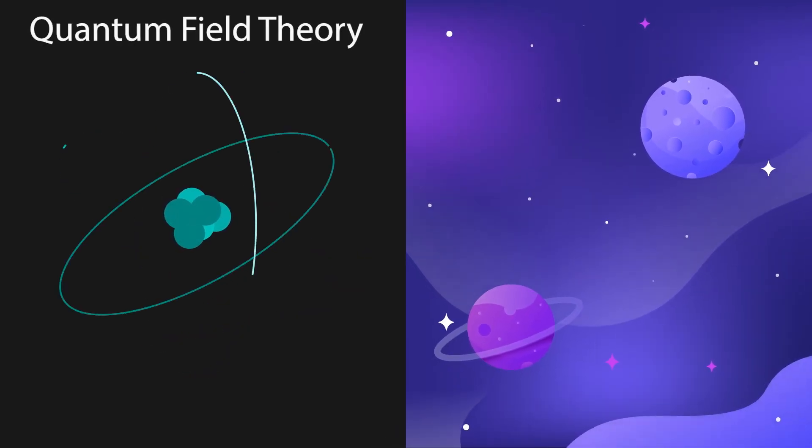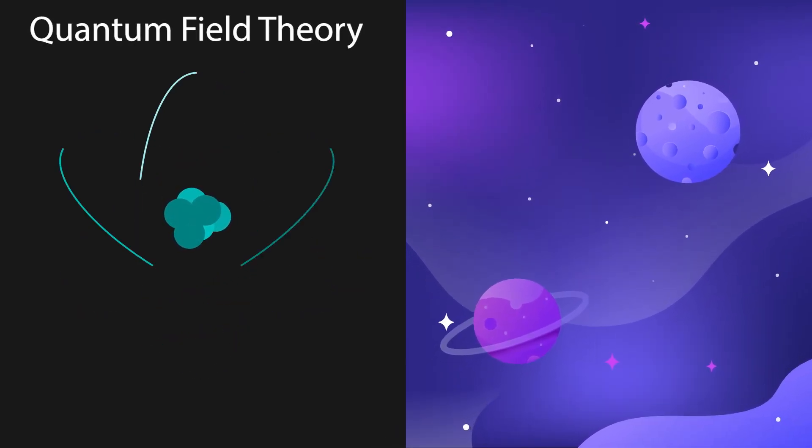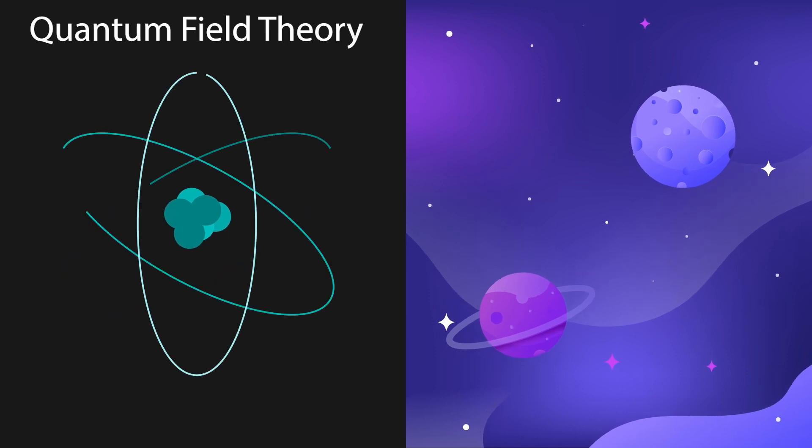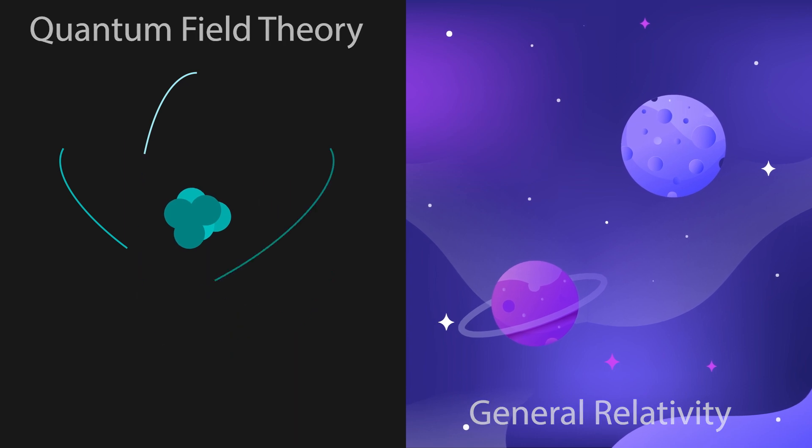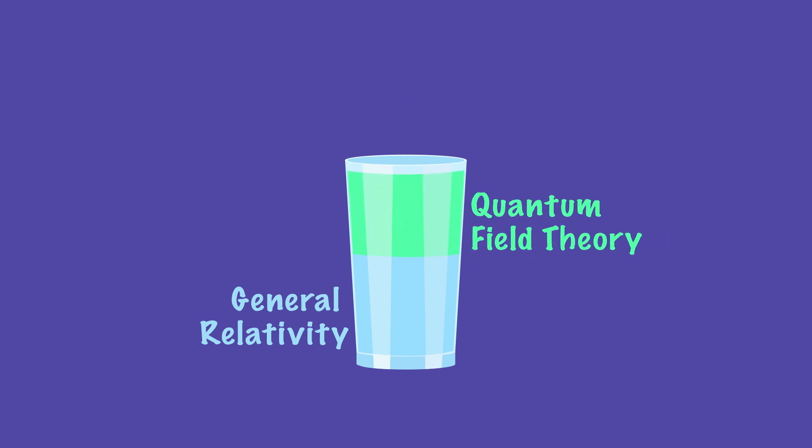While quantum field theory is great at explaining the interaction of small, subatomic particles, and Einstein's theory of general relativity is great at explaining large forces like gravity, unfortunately these two theories don't complement one another. This becomes a problem when we find ourselves in a situation where these two competing theories need to be applied to one problem.